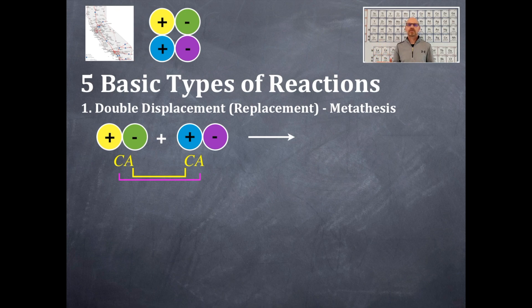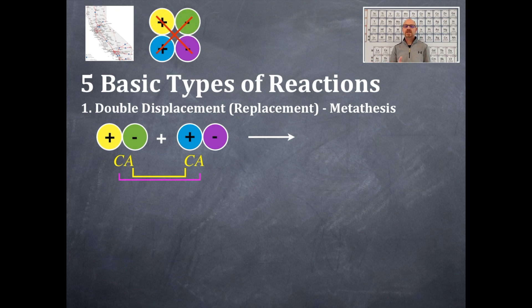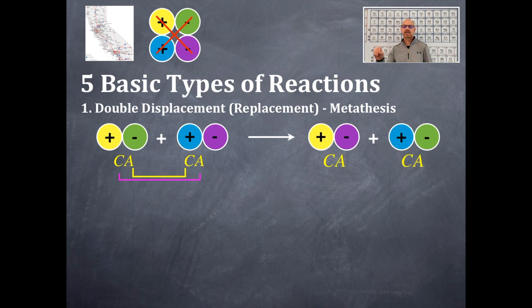Here's another way of looking at it mathematically — remember that math operation to do crisscross applesauce. You should see the same pattern that we did with the two Californians. Here are the products: you have a cation and an anion and a cation and an anion, and they are switched. Remember, the cation comes first, the anion comes second, always. So that is a double displacement, a double replacement, or a metathesis, depending on what your textbook uses.